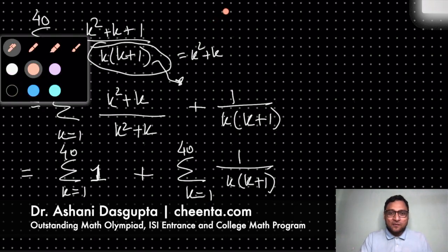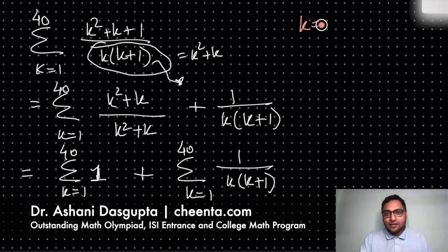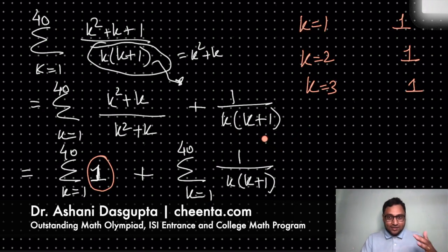Okay, so for k equal to 1 you have a 1. Then you go to the next index, for k equal to 2 you have another 1 because you just have 1 here. So for k equal to 3 you have another 1.